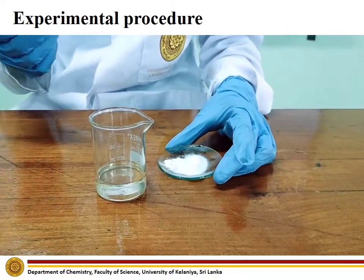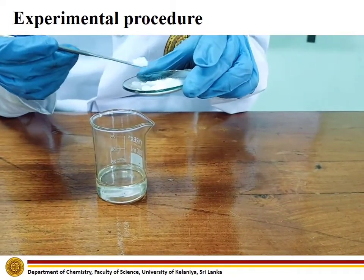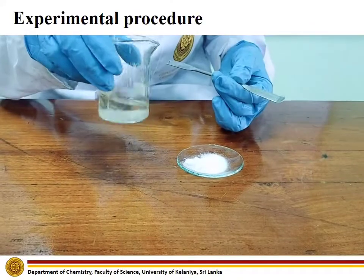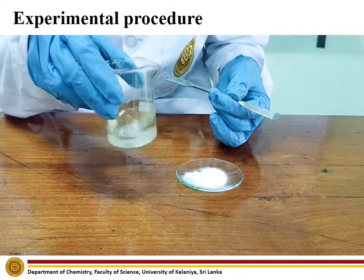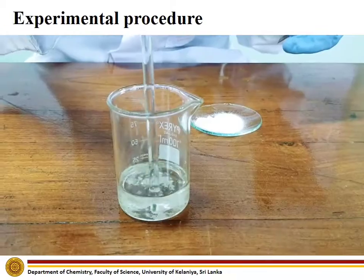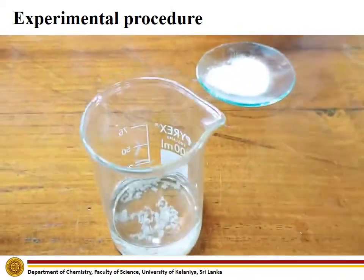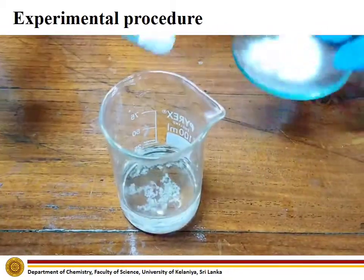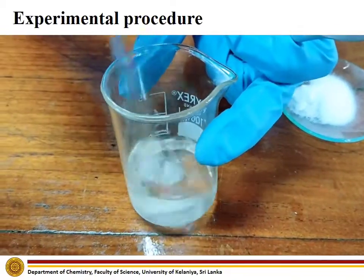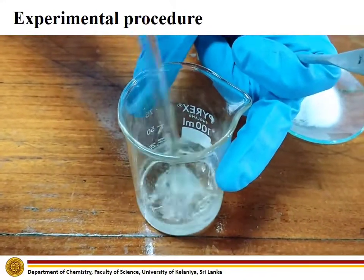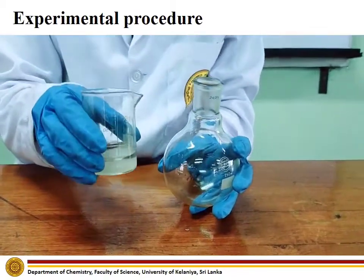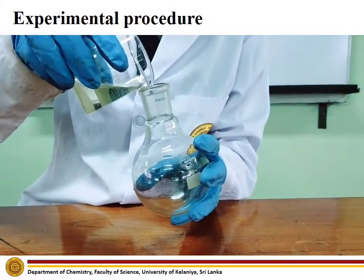Next, add anhydrous sodium sulphate into the organic fraction as the drying agent. Continue adding sodium sulphate until it no longer clumps together when swirled. Decant the liquid into the round bottom flask, leaving behind the solid sodium sulphate.